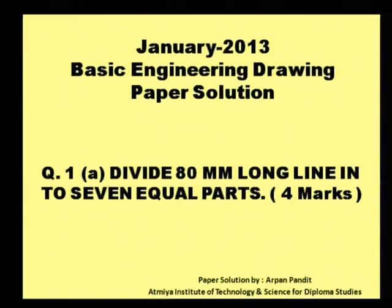Question number one is divide 80 mm long line into seven equal parts. The weightage of this portion is four marks. Now I'll show you how to divide a line into various equal parts.